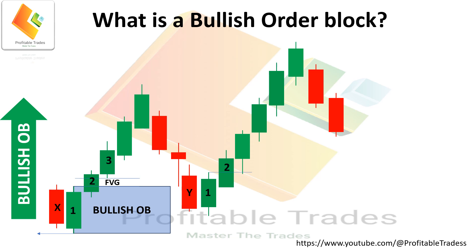If this scenario appears, we will shift our order block to the next candle in order to meet the requirement of a fair value gap. In this case, we take candle two, candle three, and candle four — there you see a fair value gap between candle two and four. In this way, we mark our order block from candle two instead of candle one, because we couldn't see a gap between candle one and candle three.